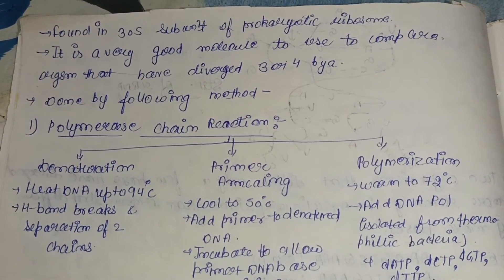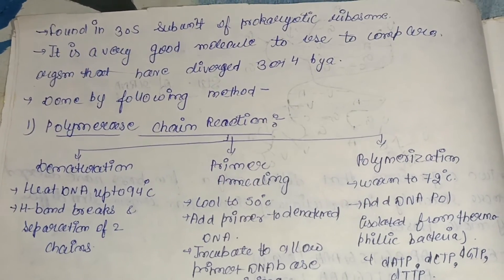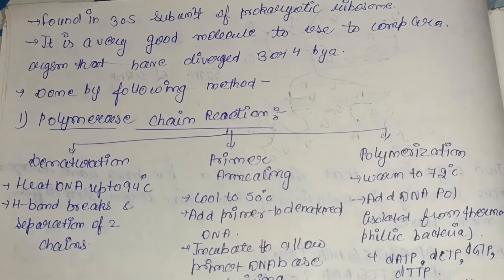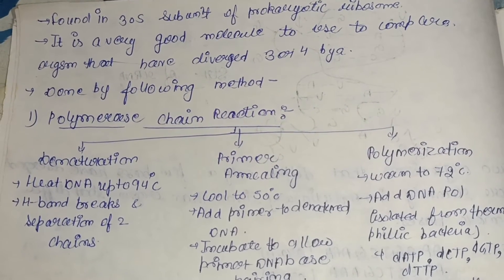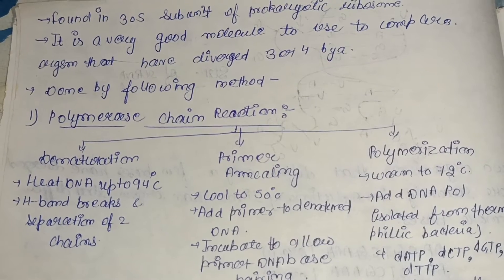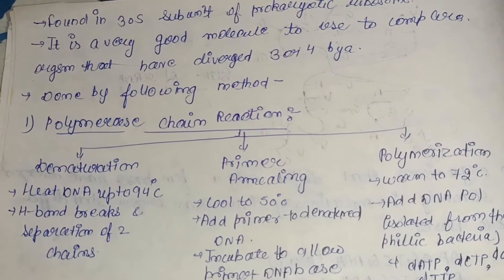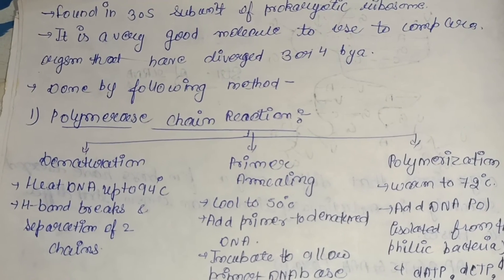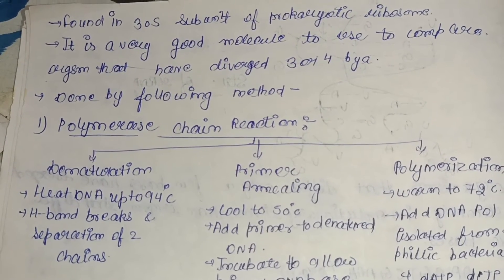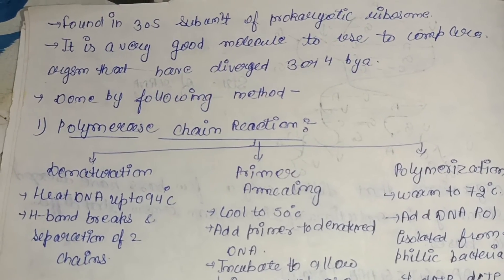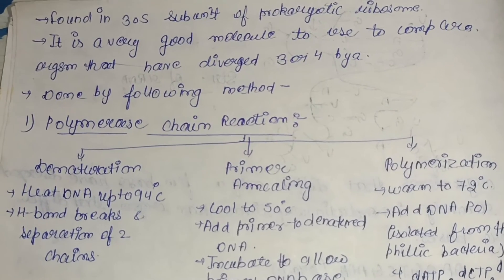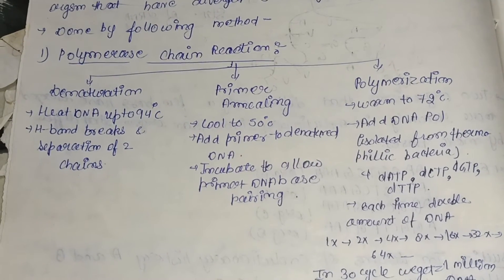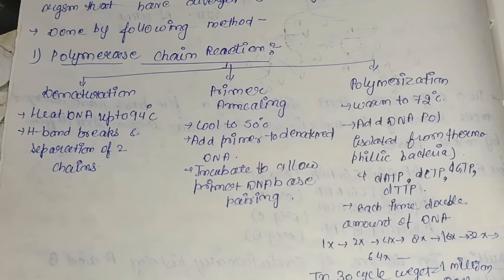16S rRNA is used as a key molecule in molecular taxonomy. It is found in the 30S subunit of the prokaryotic ribosome and is a very good molecule for comparing organisms that diverged 3 to 4 billion years ago. The genes coding for 16S rRNA are used in reconstructing phylogenies due to the slow rate of evolution of this region. It is used as a standard for classification and identification of microbes because it is present in most microbes and shows proper changes.